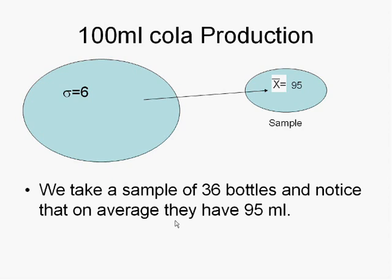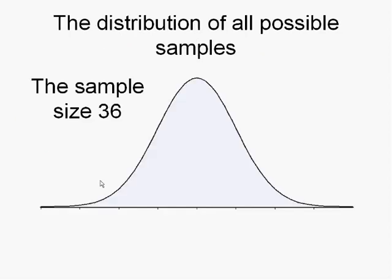The question that we ask ourselves: can we assume, just because this sample shows that on average there are 95 milliliters in each bottle, that the population average is also 95? Based on what we already know, we can say that the distribution of all possible samples of size 36 is certainly a normal distribution, because the sample size is more than 30.